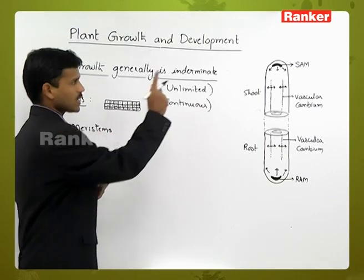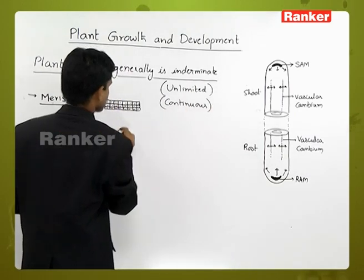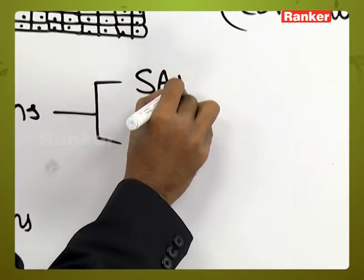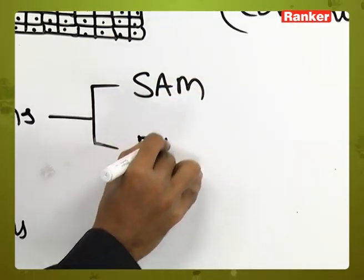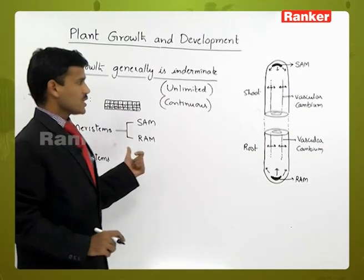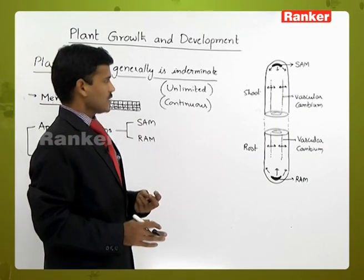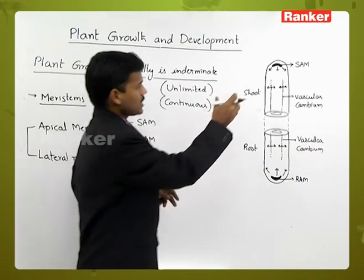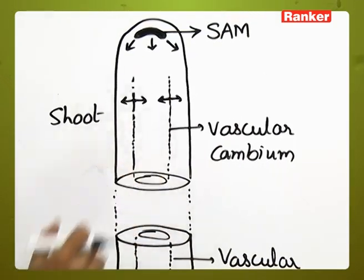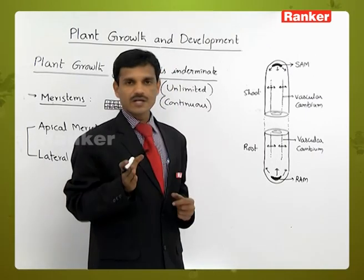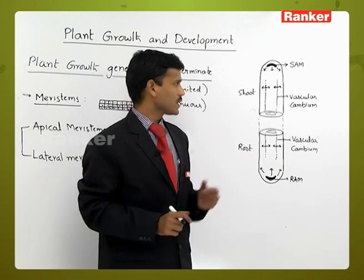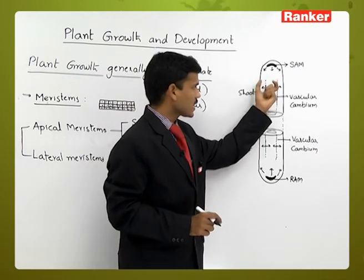Apical meristems are again of two types: shoot apical meristem and root apical meristem. Lateral meristems are present within the vascular bundle — between the vascular tissues, phloem and xylem — where the vascular cambium is present.